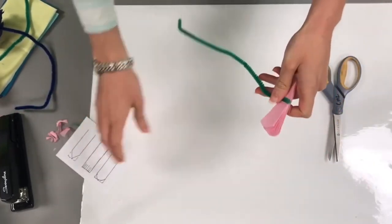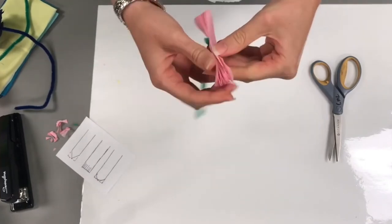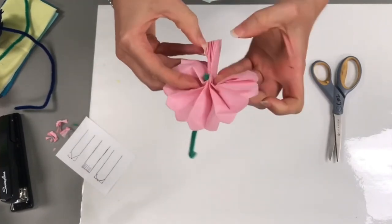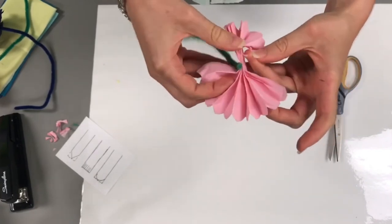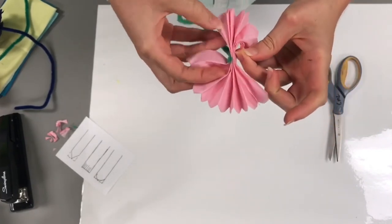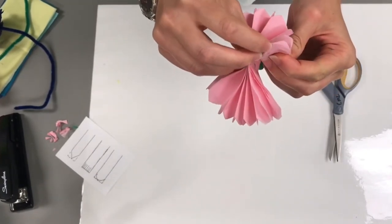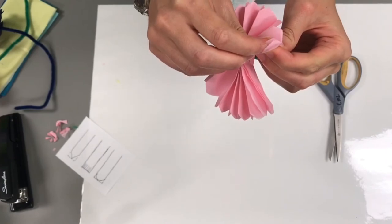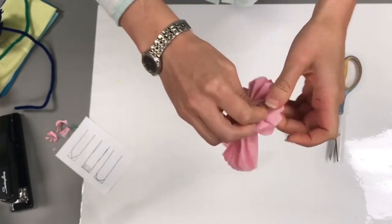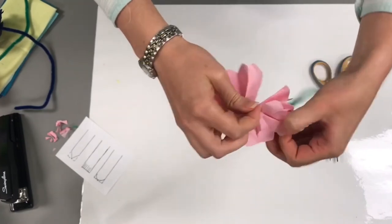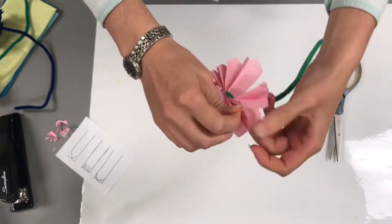And the last step, which is the most time consuming is to open the folds like that. And then fluff up each layer of tissue paper. Go slowly because it's really easy to rip these. But then again, if it rips, it doesn't really matter. So you just go around layer by layer.